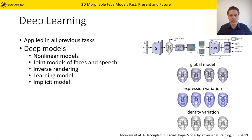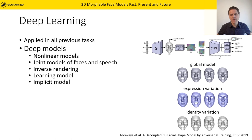Recent developments in machine learning led to several important contributions in all components of 3D morphable models. On the modeling side, the linear PCA model is very limiting and is today mostly replaced by non-linear models. For texture, generative adversarial networks are deployed, and non-linear models for shape have also become popular and are much more expressive, especially when modeling facial expressions.